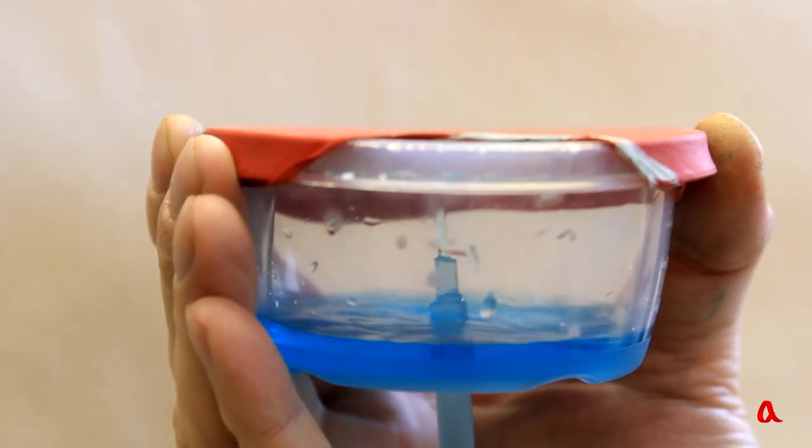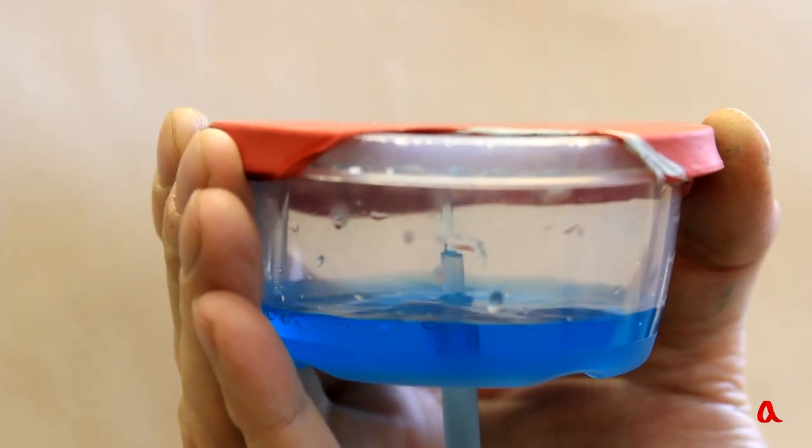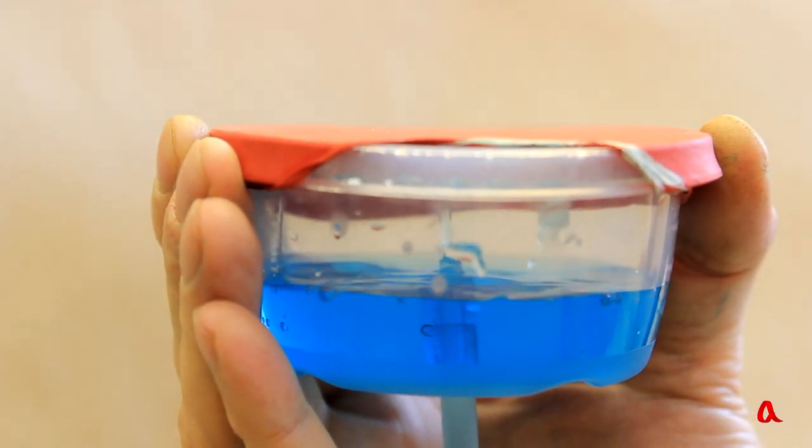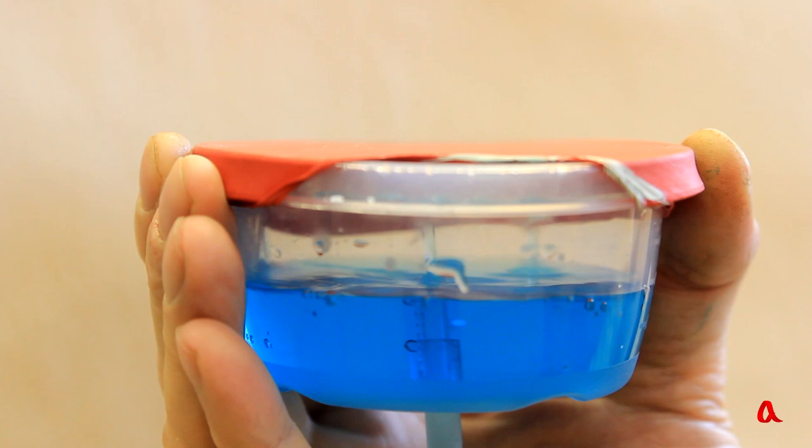The water level in the bottle is higher than that in the container. This level difference creates pressure difference at the ends of the hose. That is why the water flows down the hose.